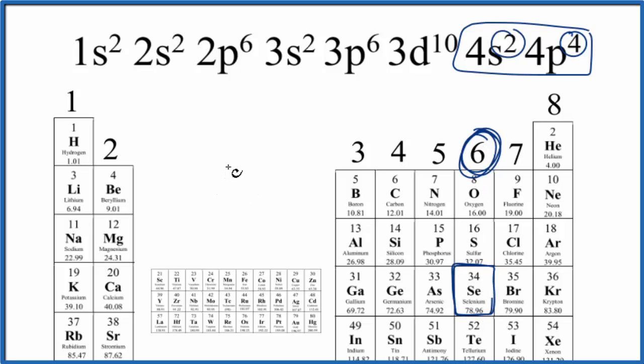If you wanted to write the Lewis structure, you'd write the element symbol, and you'd put 6 valence electrons around it. So this would be the Lewis structure for Se.